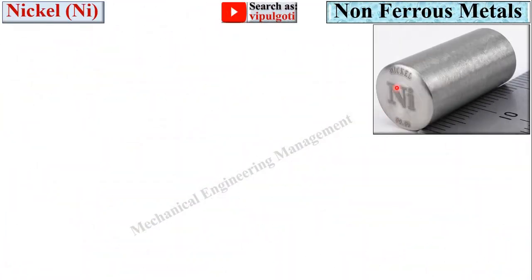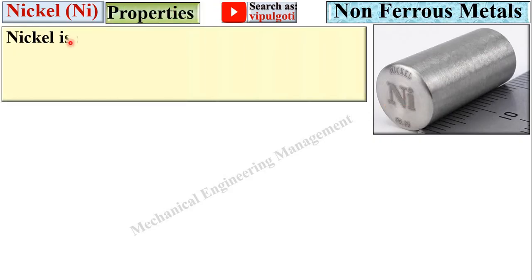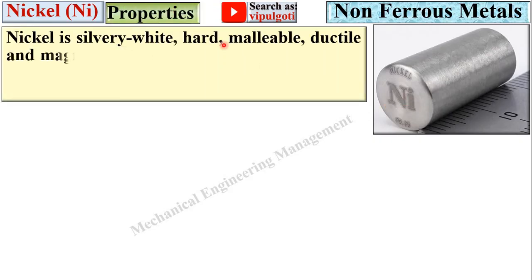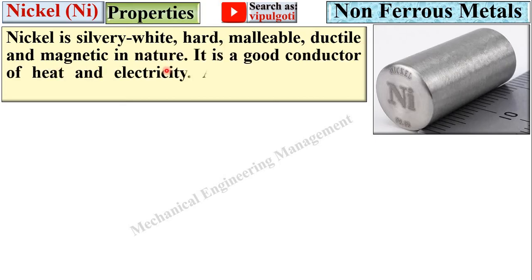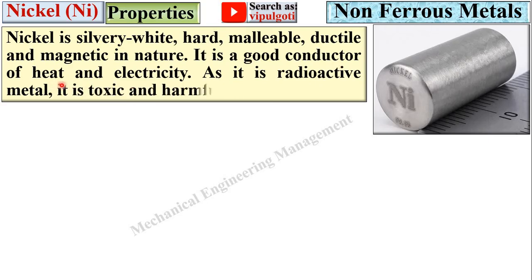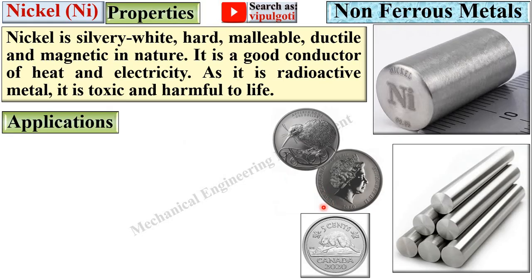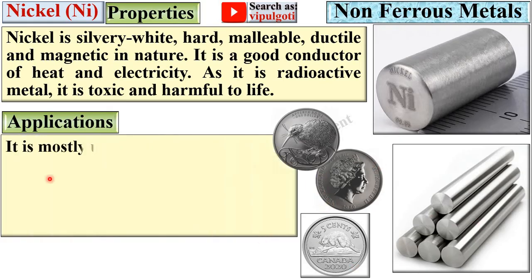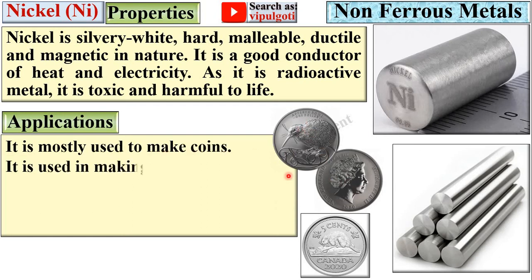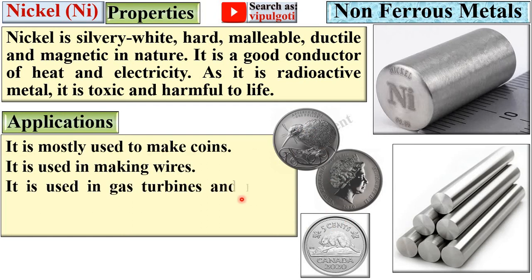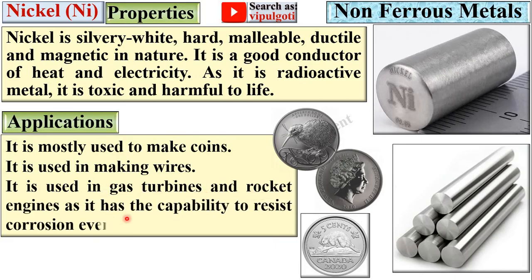Next, nickel. This is a specimen of nickel. Nickel is silvery-white, hard, malleable, ductile, and magnetic in nature. It is a good conductor of heat and electricity. As it is a radioactive metal, it is toxic and harmful to life. Applications: mostly used to make coins and wires. It is used in gas turbines and rocket engines because it can resist corrosion even at high temperatures — this is a special characteristic of nickel.